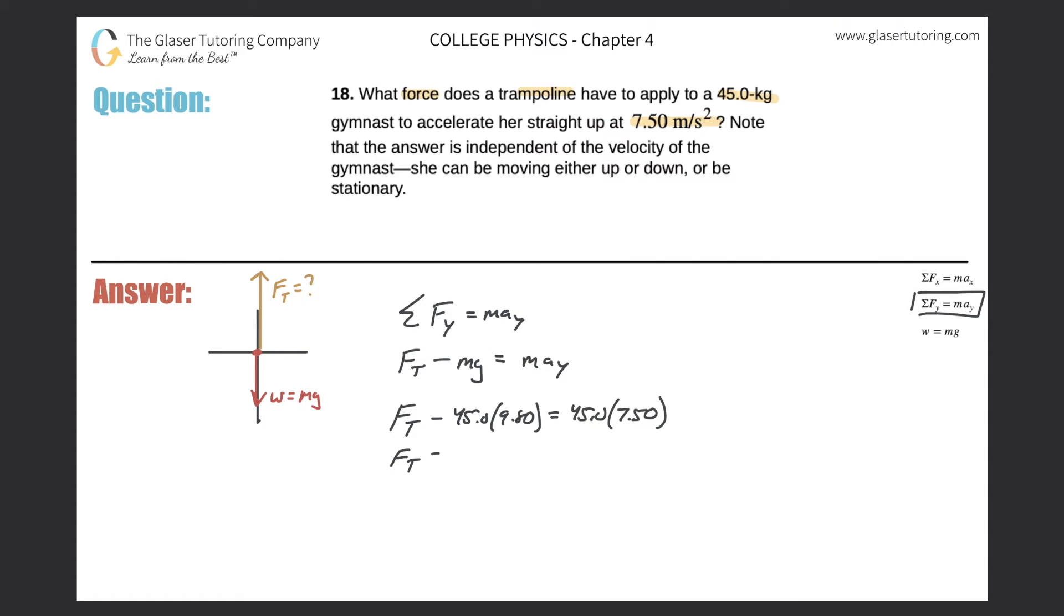So we get the force of the trampoline equals 45 times 9.8. And that's 441. So 441 equals 45 times 7.5. So that is then 337, 338, I got around there, okay?